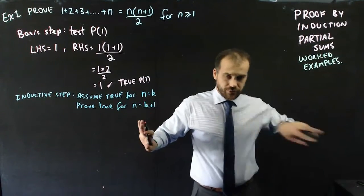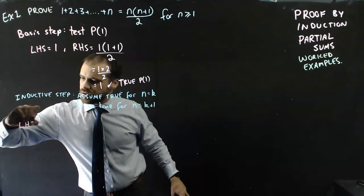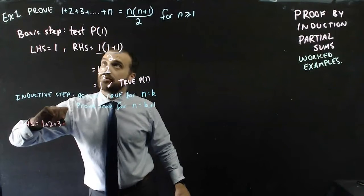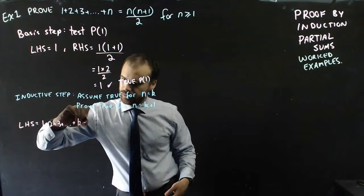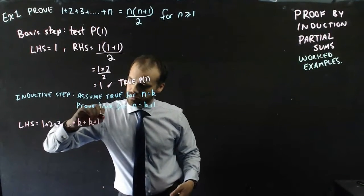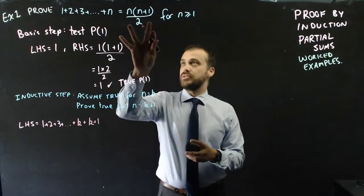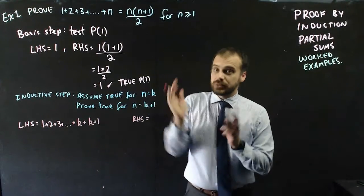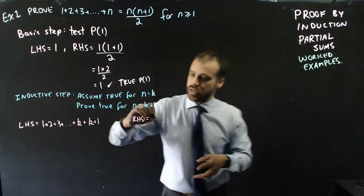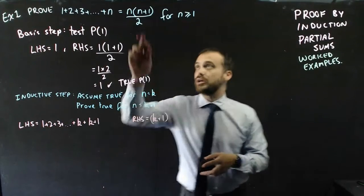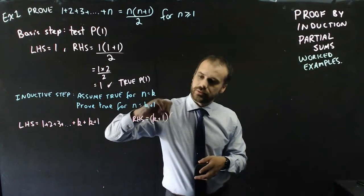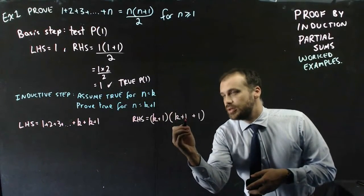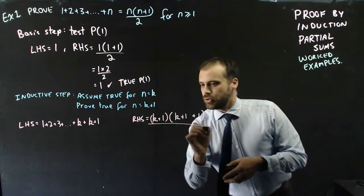Now we take our left-hand side and right-hand side and break them up. The left-hand side is going to be 1 plus 2 plus 3 plus dot dot dot plus k, plus the next term, k+1. The right-hand side is what we're targeting, and we substitute k+1 directly for n, giving us (k+1)(k+1+1) all over 2.